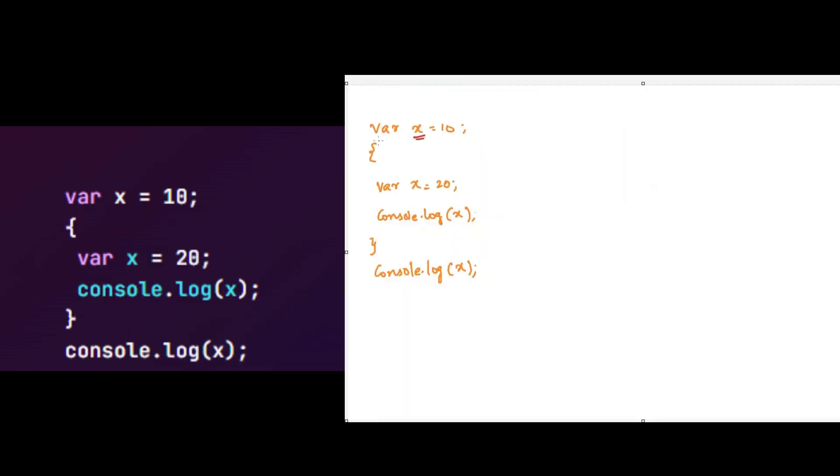Here we are declaring the variable x by using var keyword. In JavaScript, whenever we declare the variable by using var keyword, it will become global scope if it is declared outside the function. Yes, it will become function scope if it is declared inside the function.